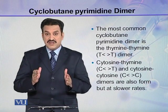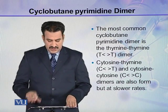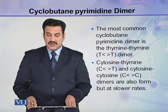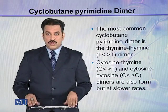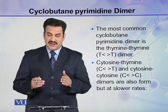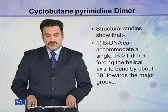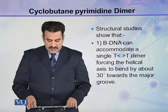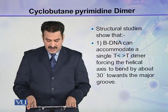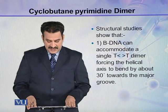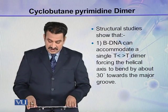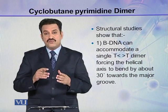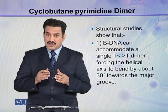The thymine-thymine dimer is formed between two thymine bases. Cytosine-thymine and cytosine-cytosine dimers are also formed but at comparatively slower rates, so the most prominent dimers are thymine-thymine. Structural studies show that B-DNA can accommodate a single thymine-thymine dimer, forcing the helical axis to bend by about 30 degrees towards the major groove.